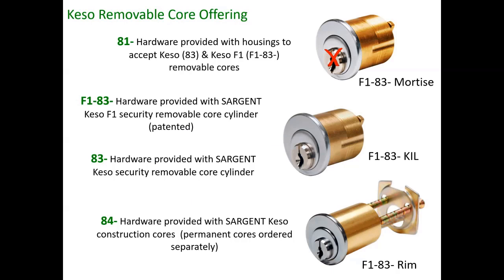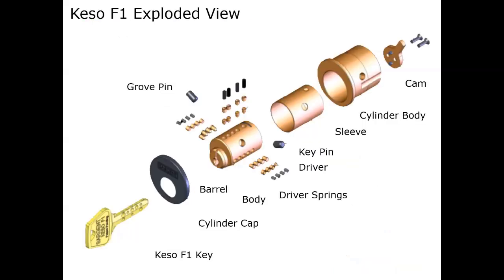This is an exploded view of the Kiso cylinder. Again, your Kiso key, your cap — could be stainless steel, brass, or bronze — goes onto your body. There's a sleeve in the cylinder body with a cam on it. You can see the 12 pins with the three banks: left, top, and center. Very unique, very strong key.